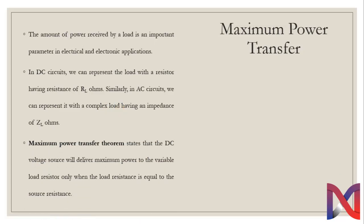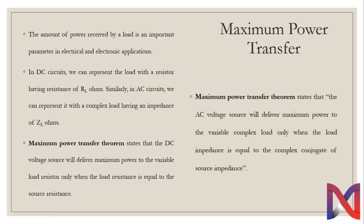The maximum power transfer theorem states that a DC voltage source will deliver maximum power to the variable load resistor only when the load resistance is equal to the source resistance. The theorem also states that an AC voltage source will deliver maximum power to the variable complex load only when the load impedance is equal to the complex conjugate of the source impedance.